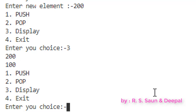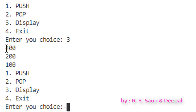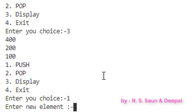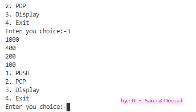Let me add one more element — this time 400. You can see 400 is added at the top when printed. Now I'll add one more element: I enter choice 1 again and this time the value is 1000. My current stack is: 1000, 400, 200, and 100.